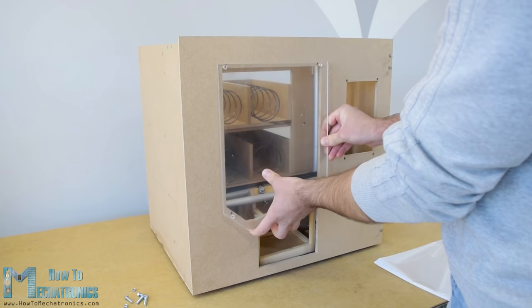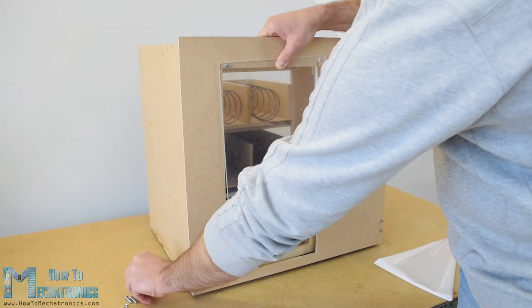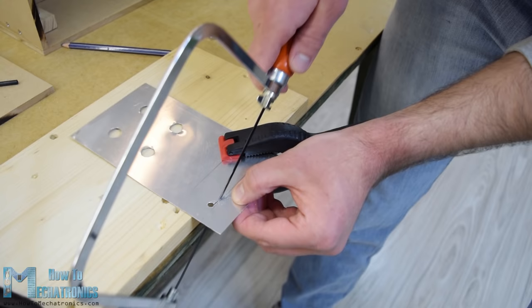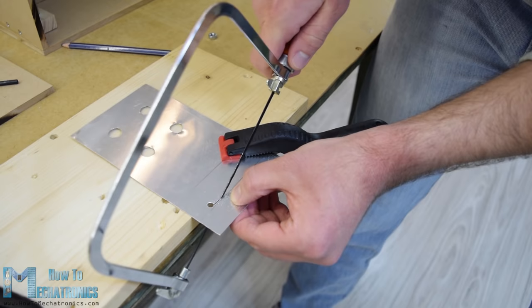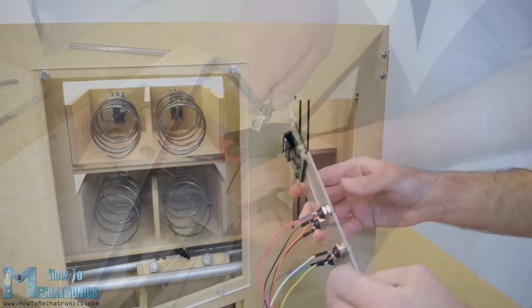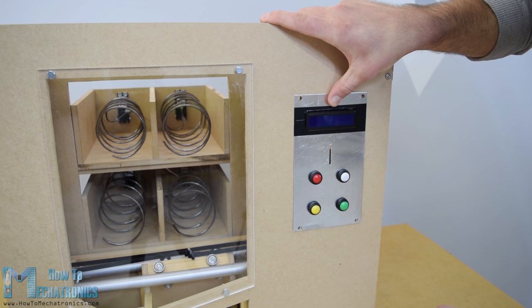Then I used 5mm thick acrylic to cover the big front opening. While for the smaller opening on the right side I used a very thin aluminum plate. Here I made four holes for the buttons as well as openings for the coins and the LCD display. I used a drill and a hacksaw for making them. Once I attached the electronic parts to the aluminum plate I attached them to the front door panel using 5mm bolts.